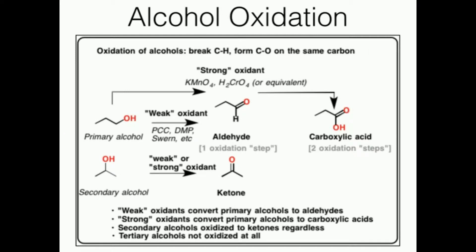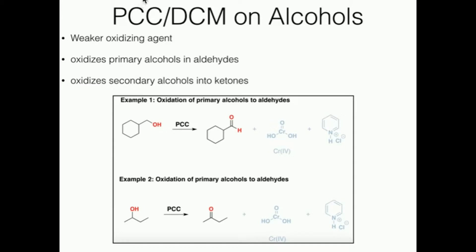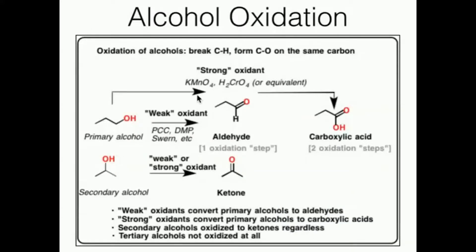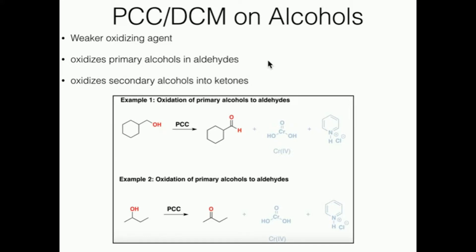If you need more detail on what we talked about, go back and watch that video. What I mentioned in the previous video is that we have both weak oxidants and strong oxidants. The next video will cover strong oxidants, but in this video we're going to talk about weaker oxidants — reagents such as PCC, DMP, and there's also a reaction called a Swern oxidation. From experience, the most common one is PCC. DCM stands for dichloromethane, the solvent in which PCC reactions normally take place, but we can just say PCC for simplicity.